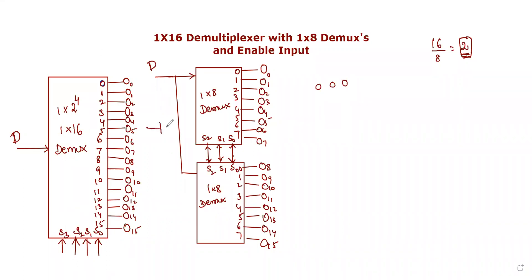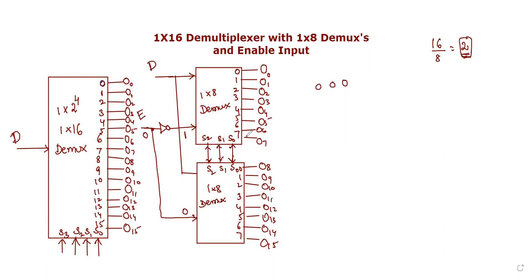With the ENABLE signal, I connect it as a direct link. If ENABLE is 0, the first 1 by 8 demux is active and we can route output successfully. If ENABLE is 1, the first demux is inactive — output will be 0 — and the second demux is activated. S0, S1, S2 values range from 0,0,0 to 1,1,1. According to the values of selection inputs, data will be transferred to the corresponding output line.